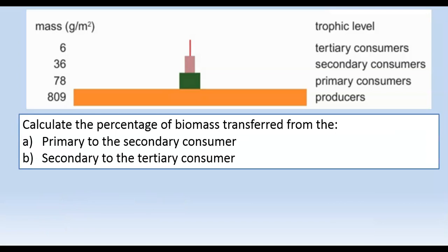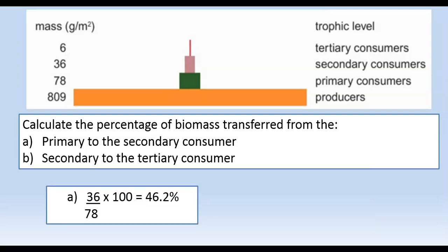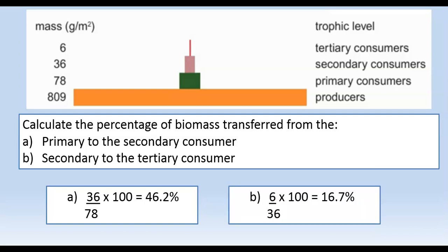A couple more examples: calculate the percentage biomass transferred from the primary to the secondary, and the secondary to the tertiary. From primary to secondary, we take the secondary value of 36 divided by the input of 78, times by 100, which gives 46.2%. And then secondary to tertiary: the tertiary value of 6 divided by the input of 36, times by 100, gives 16.7%.